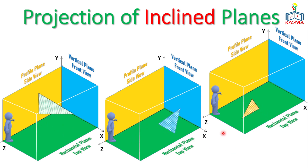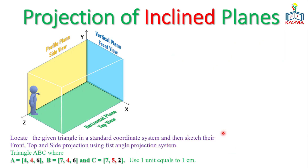Now let's move to the projections of inclined planes using an example. The example is: locate the given triangle in a standard coordinate system and sketch the front, top, and side projections using the first angle projection system. Triangle ABC is given with coordinate points — A is (4, 4, 6), B is (7, 4, 6), and C is (7, 5, 2) — where coordinates are in centimeters along x, y, and z respectively.